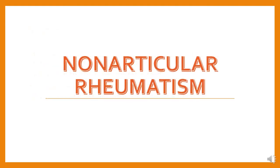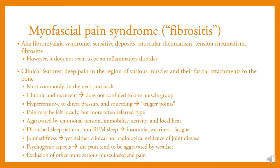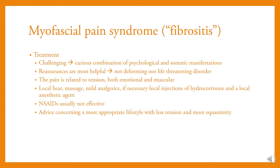Non-articular rheumatism: myofascial pain syndrome, also known as fibromyalgia syndrome. Clinical features include pain in the region of various muscles and their fascial attachment to bone, most commonly in the neck and back. It is chronic and recurrent, does not confine to one muscle group, and is hypersensitive to direct pressure and squeezing. Pain may be local but more often is referred. It is aggravated by emotional tension, immobility, activity, and local heat; disturbed sleep pattern (non-REM) and joint stiffness are noted. Treatment is challenging due to a curious combination of psychological and somatic manifestations. Reassurance is most helpful; local heat, massage, mild analgesics, and if necessary local injection of hydrocortisone in a local anesthetic agent are used. Advice concerning a more appropriate lifestyle with less tension is recommended.